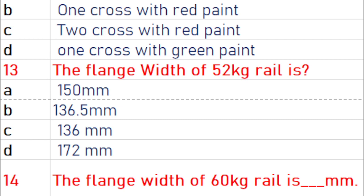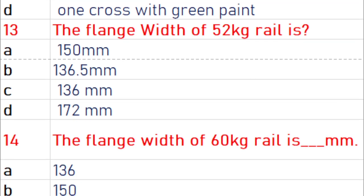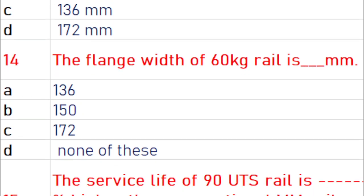The flange width of 52 kg rail is 136 mm. The flange width of 60 kg rail is 150 mm.